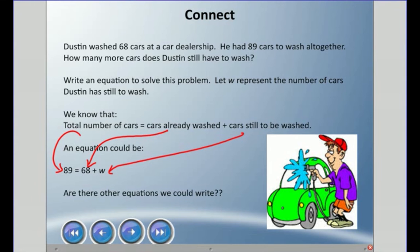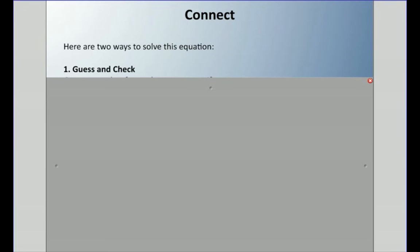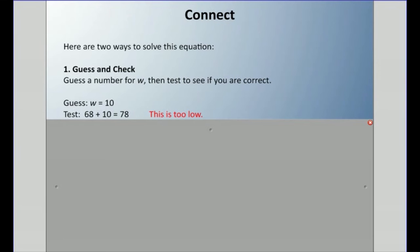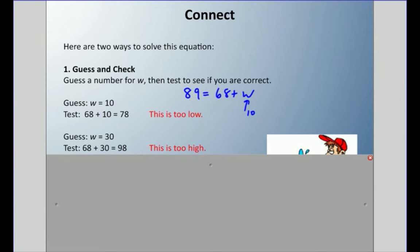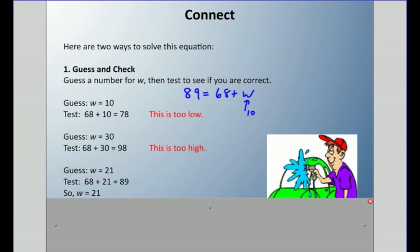Here's two ways to solve this equation. We could use something called guess and check, so we could guess a number for w and then test to see if we're correct. What if we guess 10? If we add 10, so 89 equals 68 plus w. If we substitute 10 in here, does it work? Well no, 10 plus 68 is 78, that's too low. What if we guess 30? Well 30 plus 68 is too high, it's 98. If we guess 21, we can discover that 68 plus 21 is in fact 89, so w equals 21.